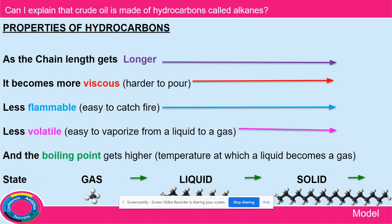These are the properties of hydrocarbons — you've got to know them. Look at them all and have a look at the pictures at the bottom, because as the hydrocarbons get bigger, the state changes from gas to liquid to solid. As the chain length gets longer, it gets harder and harder to pour. Gas is easier to pour than a liquid, and liquid is easier to pour than a solid.